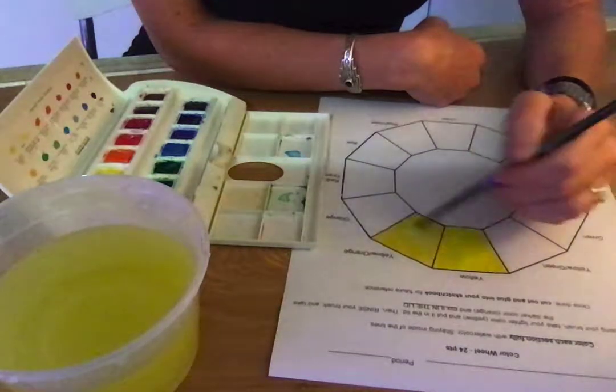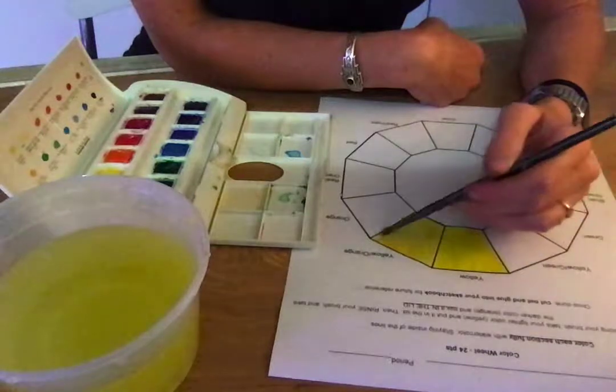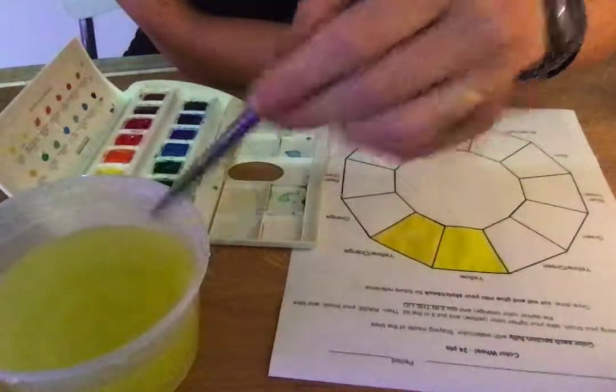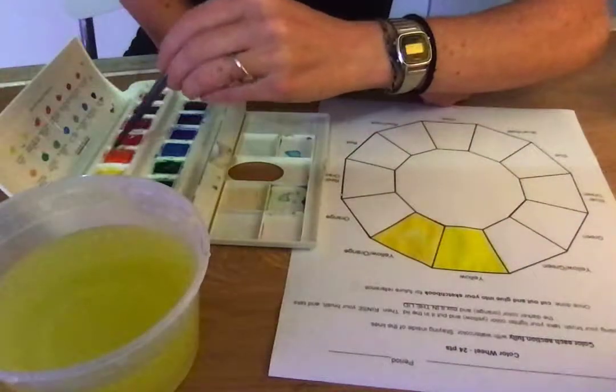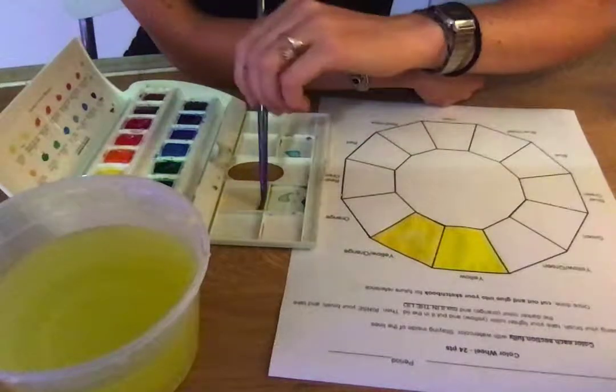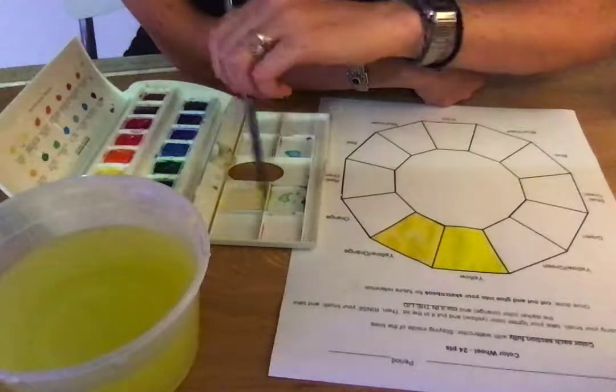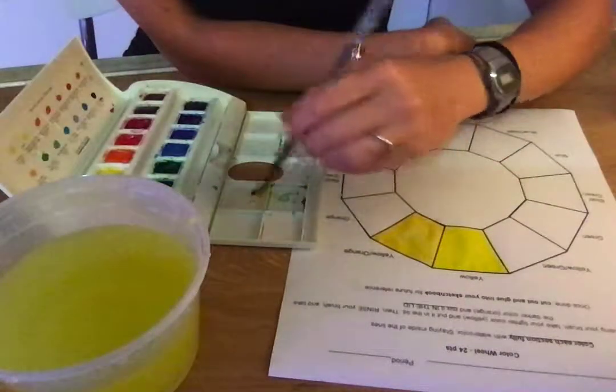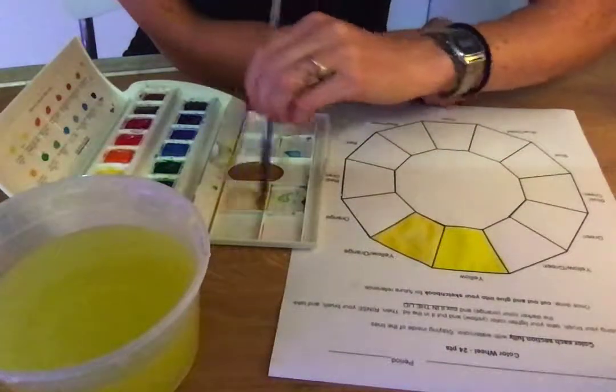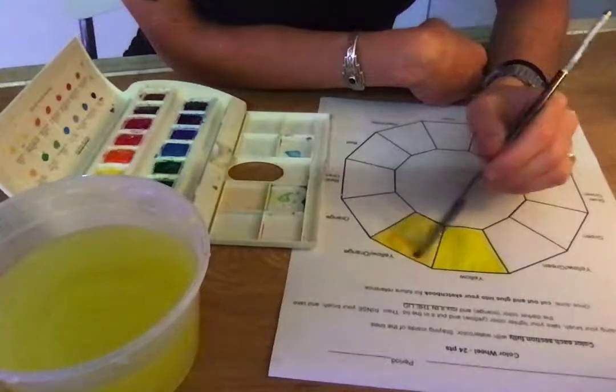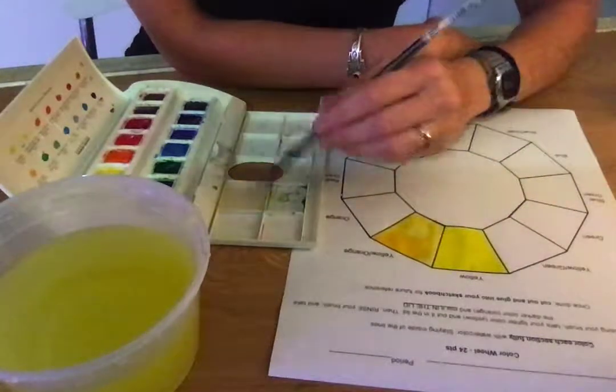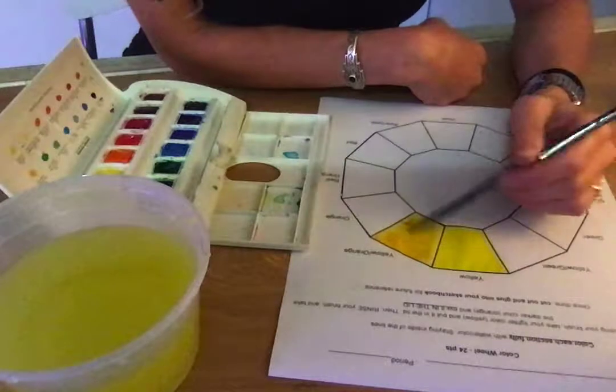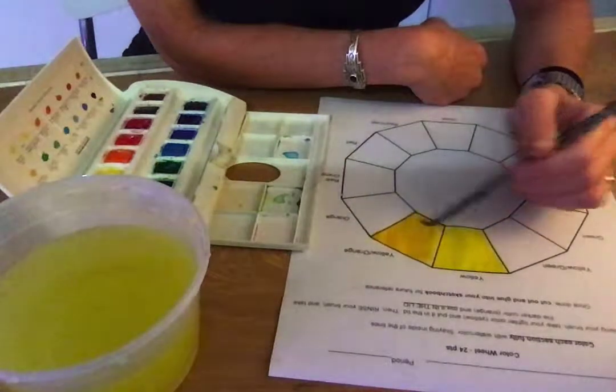So while this paper is still wet, I'm going to remix a little bit more of my yellow orange, because the original color I mixed was still a little too yellow. And since the paper is still a little wet, I can actually just kind of blend this color in really nicely.